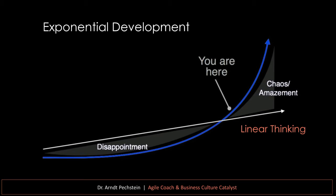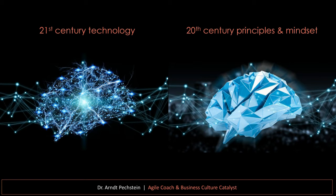Technology and connectivity are growing exponentially, and we are at an accelerating track where we really feel it. At the same time, our brains are hard-wired to think only in linear fashion, so there's a growing gap between how we think the future will be and how it actually will be. We need methods to deal with this dilemma. We're using 21st-century technologies but are mostly conditioned in 20th-century outdated principles and mindsets — and we need to radically challenge that.